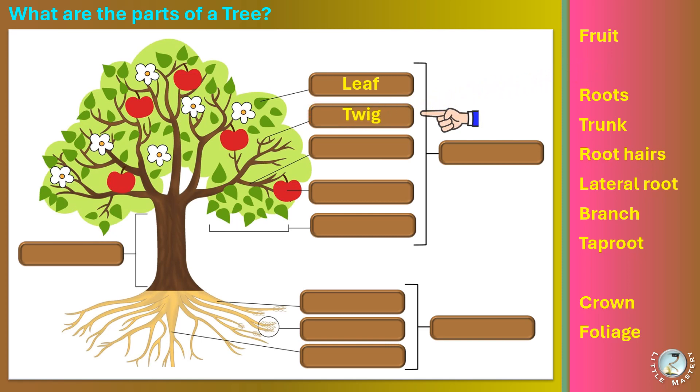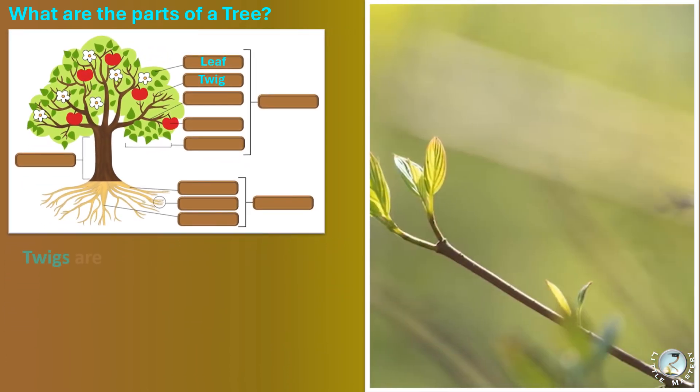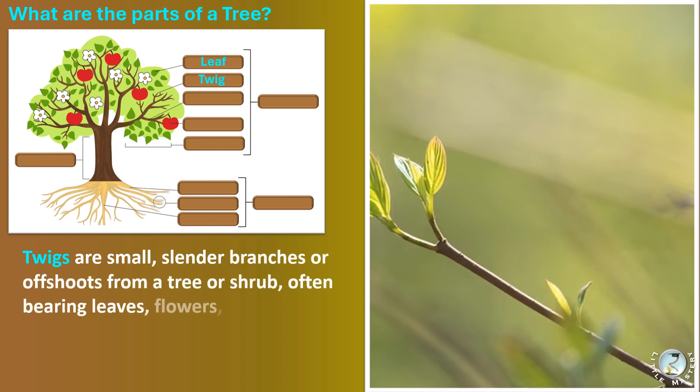Twigs are small, slender branches or offshoots from a tree or shrub, often bearing leaves, flowers, or fruits in their growth.